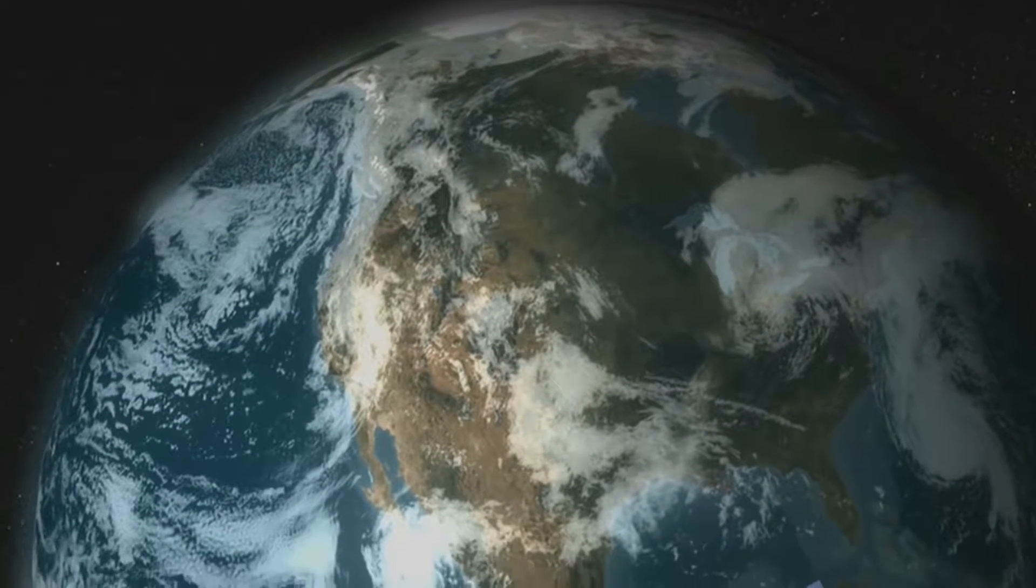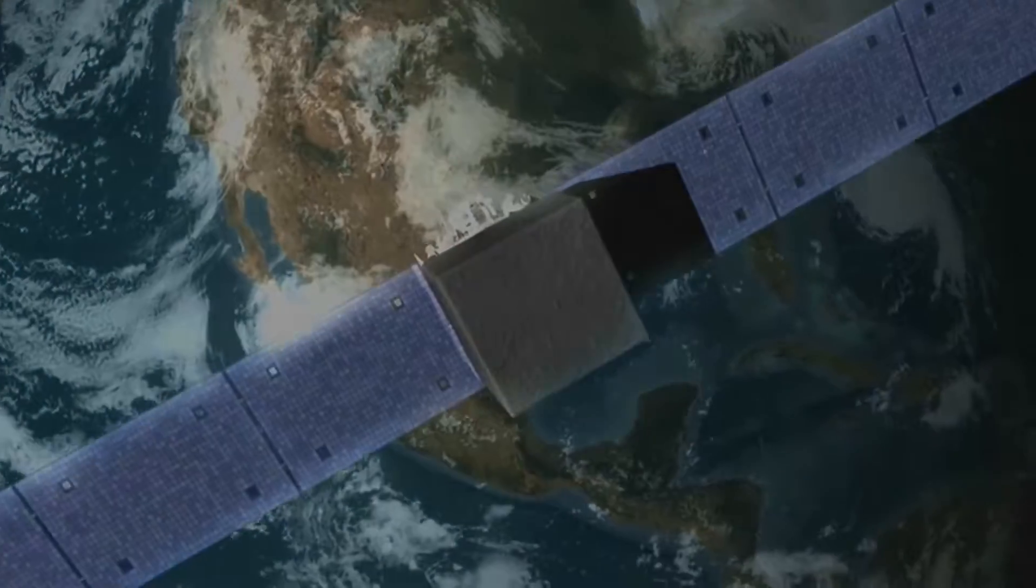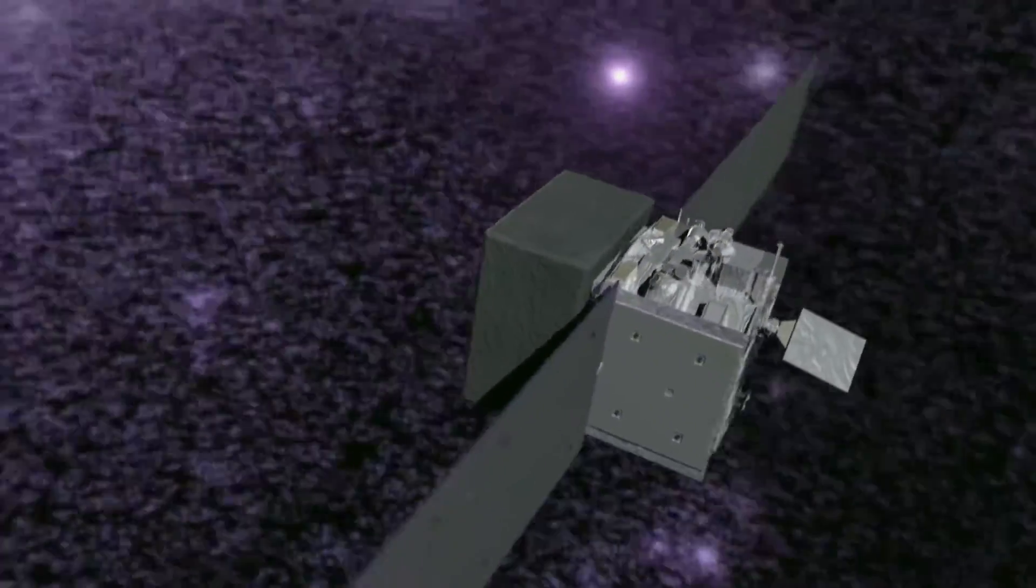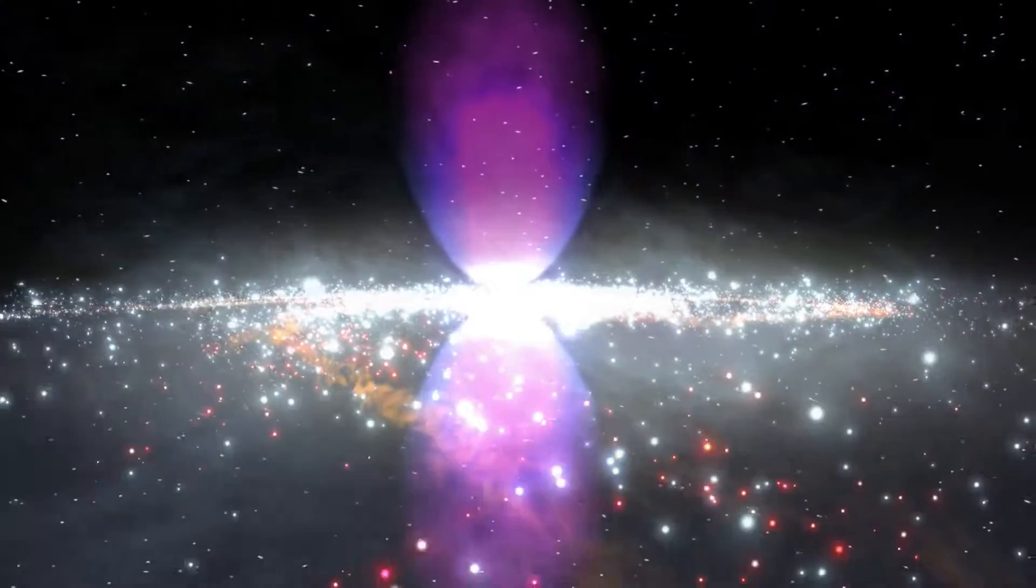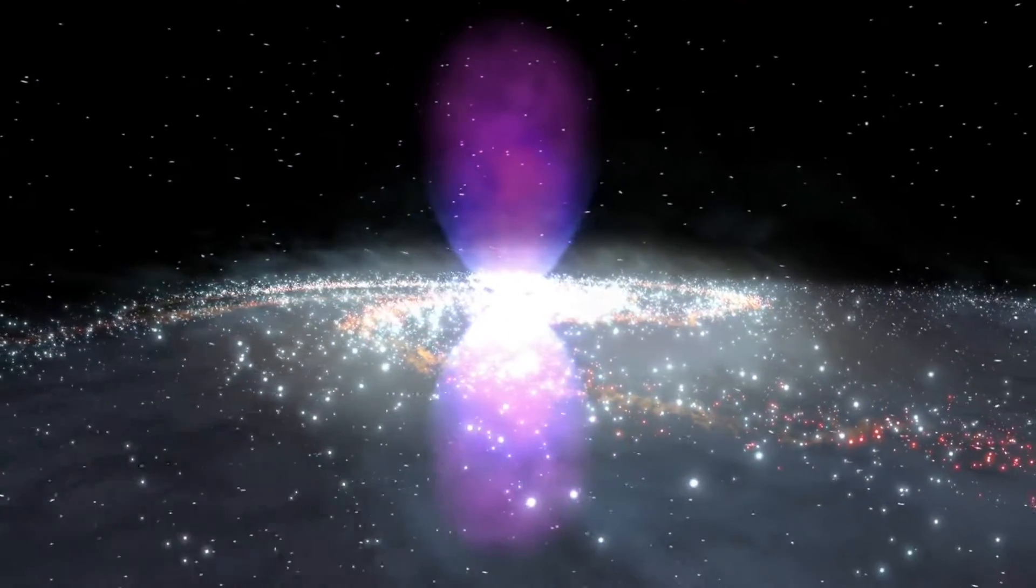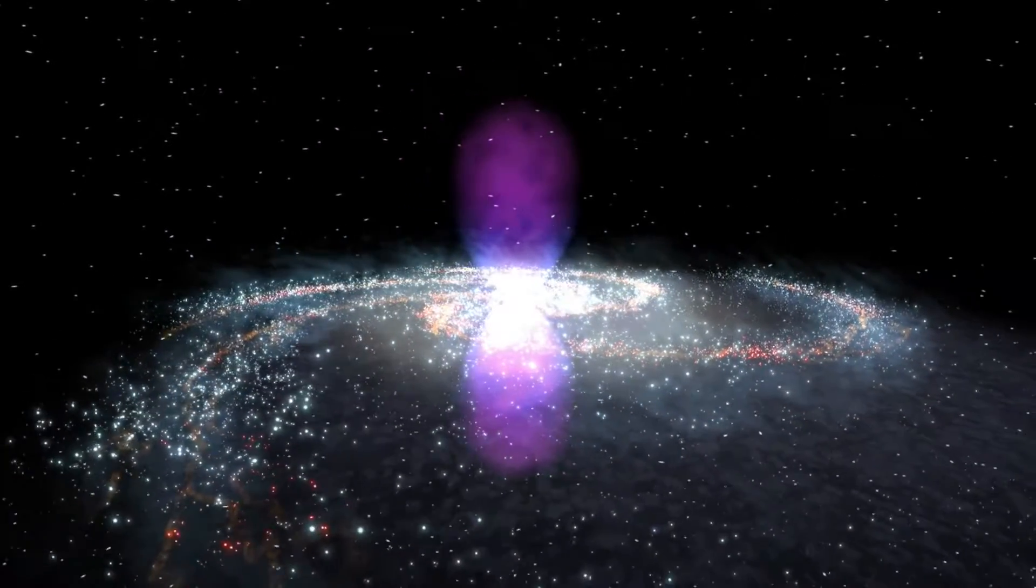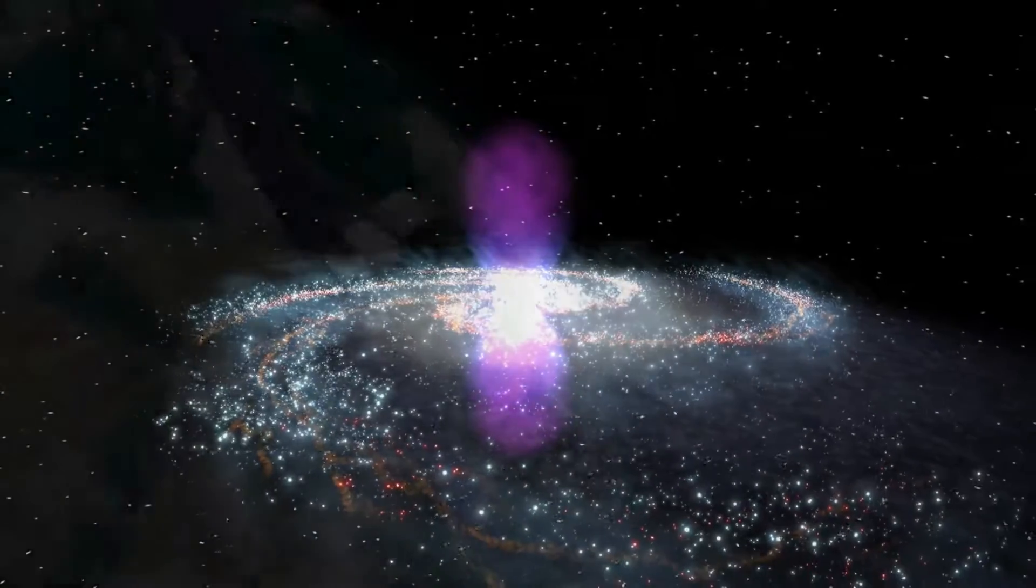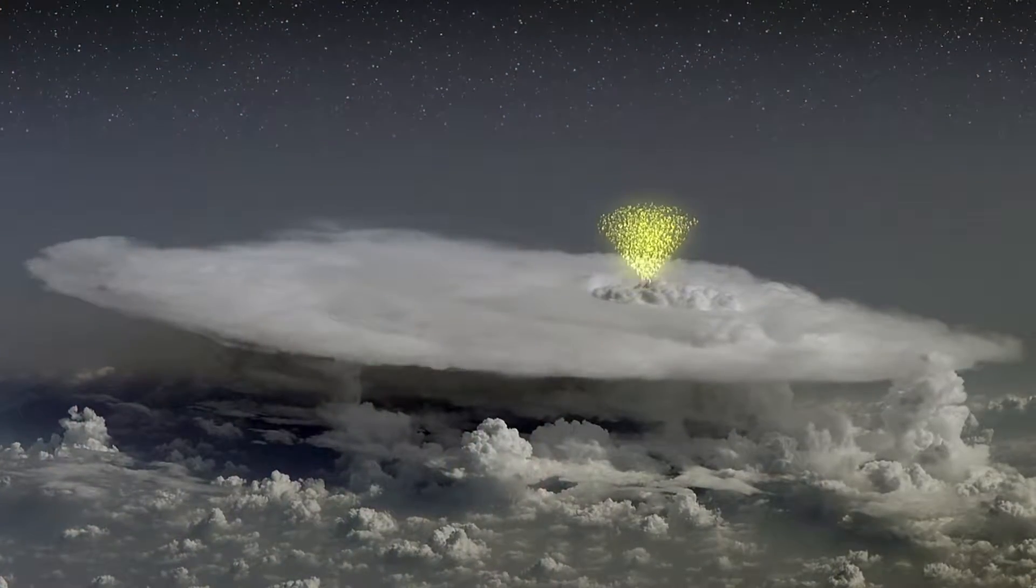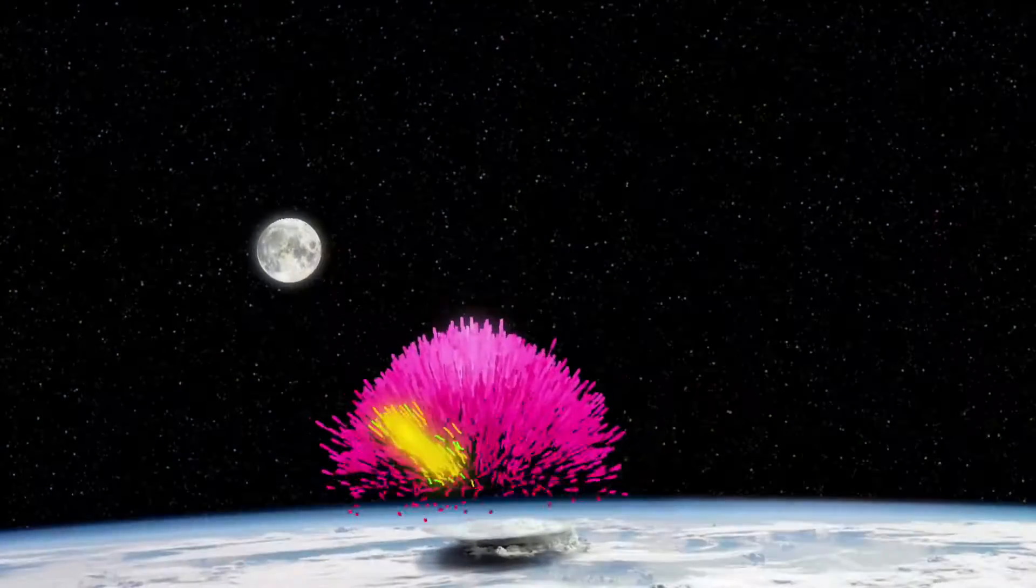To be sure, antimatter does exist in our universe today. The Fermi Gamma Ray Space Telescope spotted a giant plume of antimatter extending out from the center of our galaxy, most likely created by the acceleration of particles around a supermassive black hole.